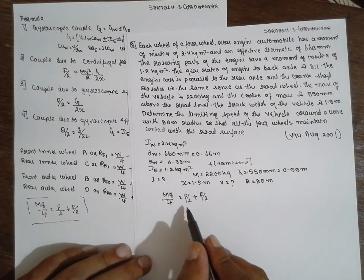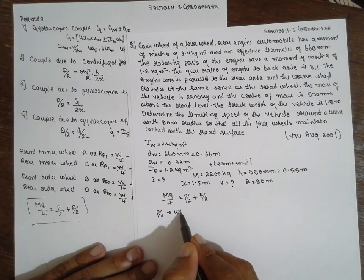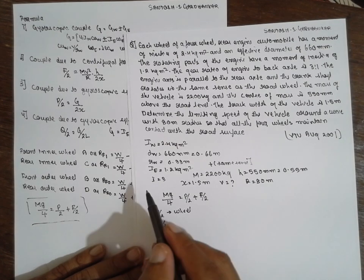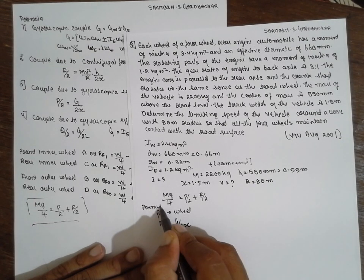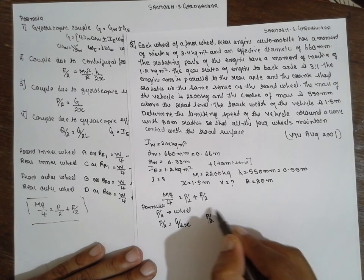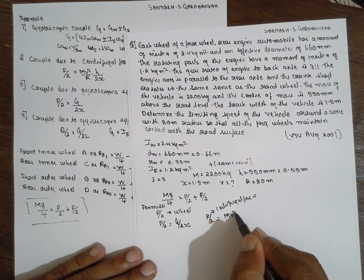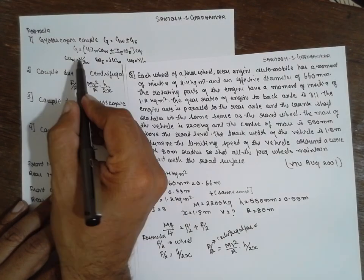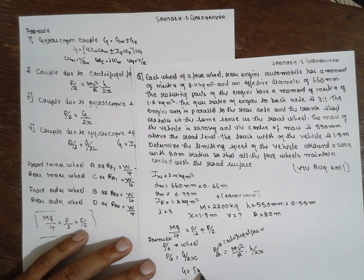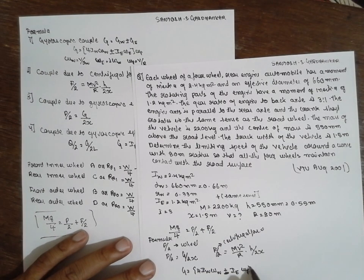First I will find p. The p/2 formula for the wheel gyroscopic couple is G divided by 2x. The f/2 formula for centrifugal force is m·v²/r multiplied by h divided by 2x. Now for G: G equals 4·IW·ω_W·v plus, because it is the same sense, IE·G_ratio·ω_W·v.